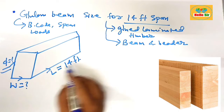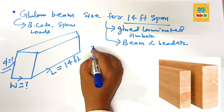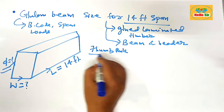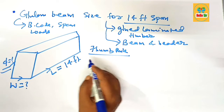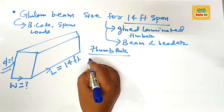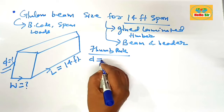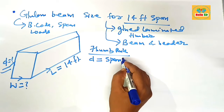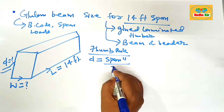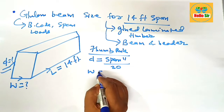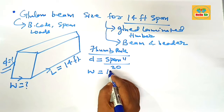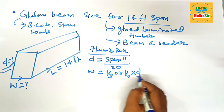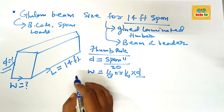Here we find the size according to the thumb rule. As per the thumb rule: the depth should be the span length in inches divided by 20, and the width section of the beam should be one-third or one-fourth of the depth section. This is the thumb rule for finding the correct glulam beam size.